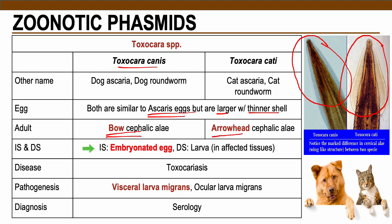In terms of the life cycle, the infective stage of both species — Toxocara cati and canis — is the embryonated egg. While the diagnostic stage is the larva, which actually resides in the infected tissues of the host.